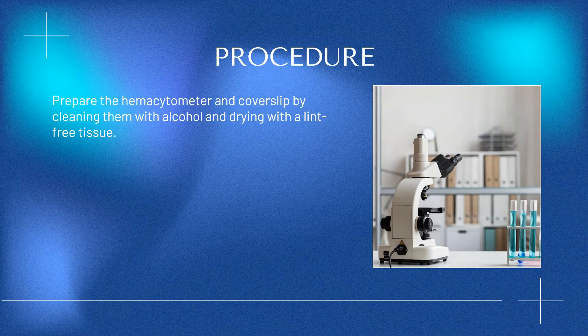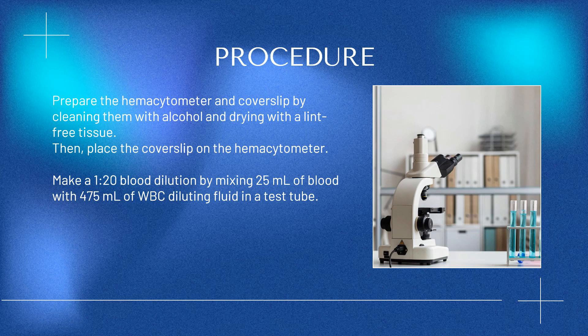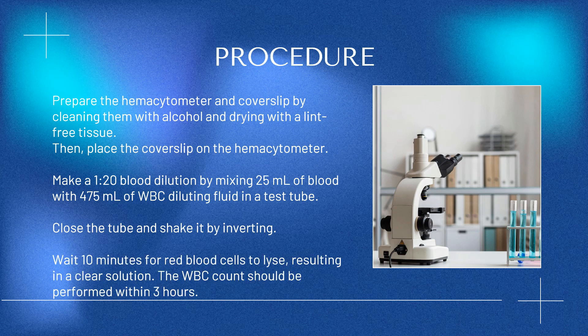Procedure: Prepare the hemocytometer and coverslip by cleaning them with alcohol and drying with a lint-free tissue, then place the coverslip on the hemocytometer. Make a 1 to 20 blood dilution by mixing 25 µL of blood with 475 µL of WBC diluting fluid in a test tube. Close the tube, shake by inverting, and wait 10 minutes for red blood cells to lyse, resulting in a clear solution. The WBC count should be performed within 3 hours.